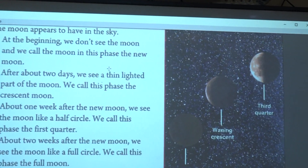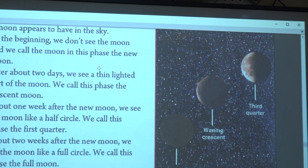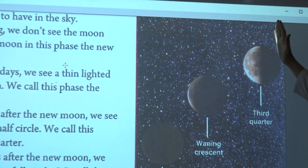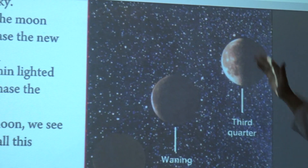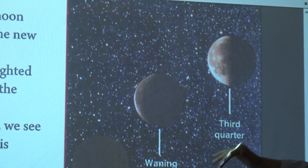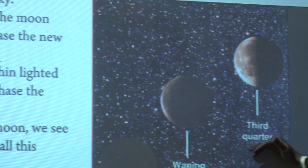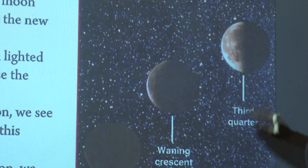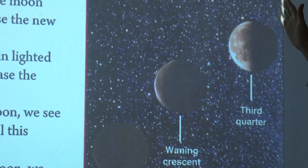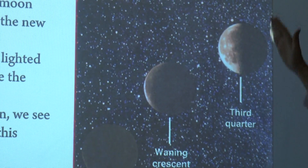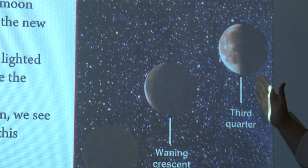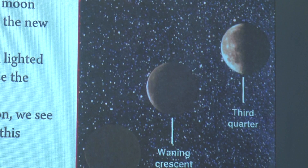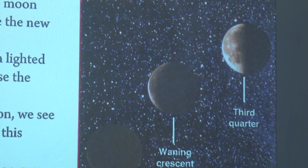Three weeks after the new moon phase, we can see the moon like a half circle again. This phase is called third quarter — we can again see half of the moon. This phase is called third quarter.